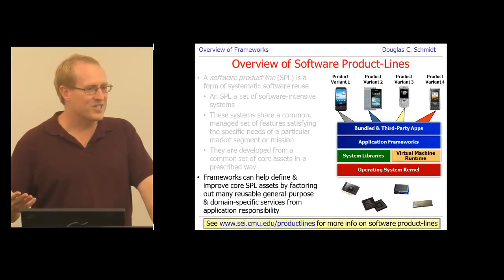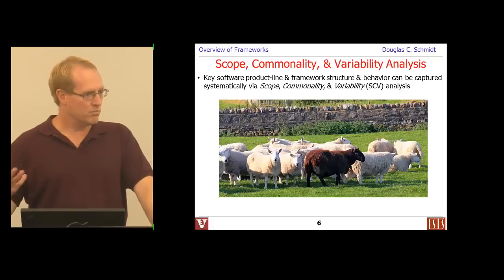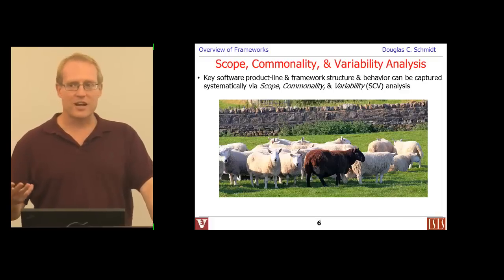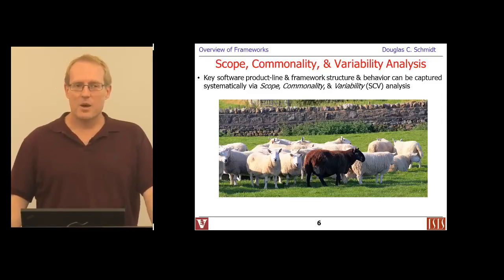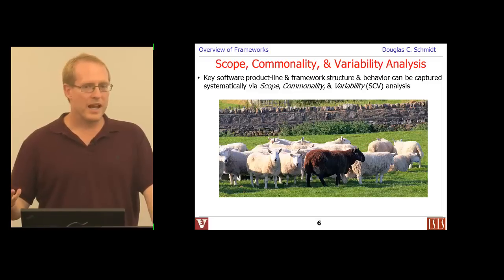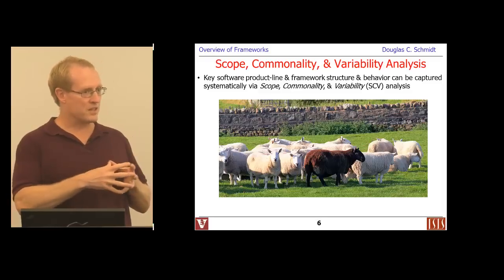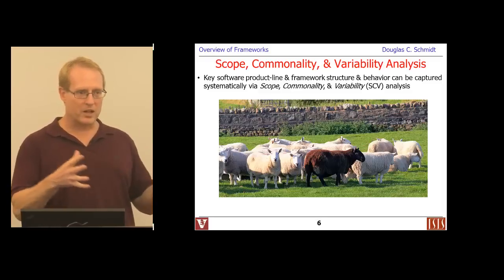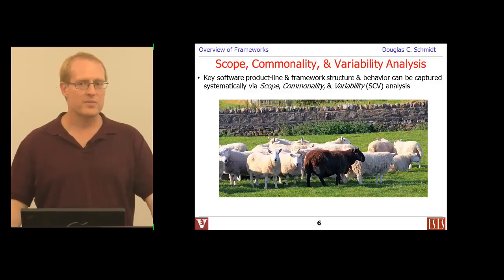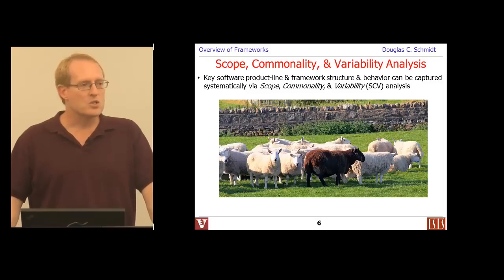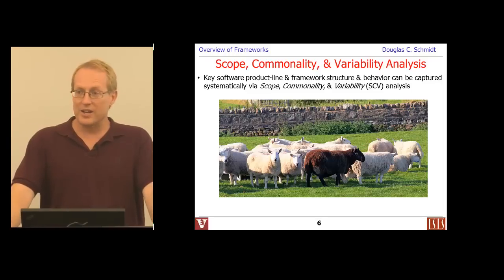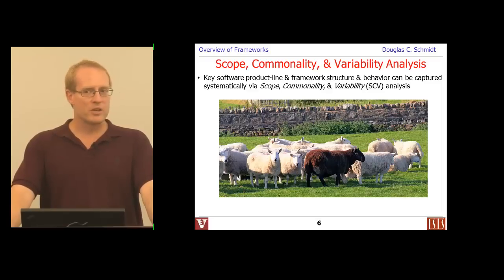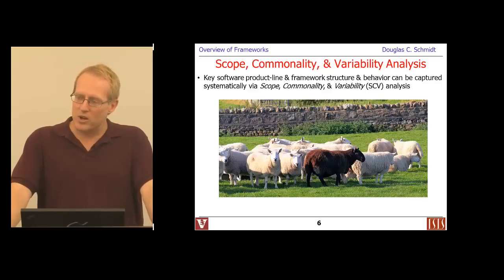Using a software product line or framework is tricky enough — you have to learn a lot of stuff. But it's even harder to develop one, because you have to be able to anticipate all the different uses. People will take this common systematically reusable pile of code and apply it in ways that may not have been anticipated by the initial developers. So how do you go about building a framework or a software product line? That's what we're going to talk about here.